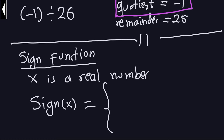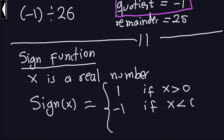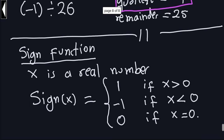You might actually guess what the sign function does. Sign is basically telling you whether a number is positive, negative, or zero. The sign of x will be 1 if x is a positive number. The sign of x will be negative 1 if x is less than 0. And the sign of x will be 0 only if the value of x is exactly 0.